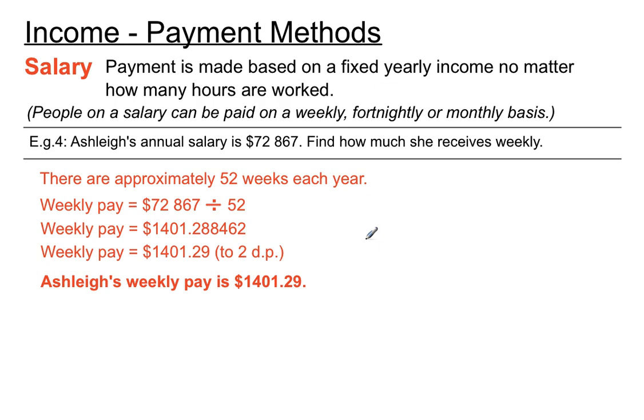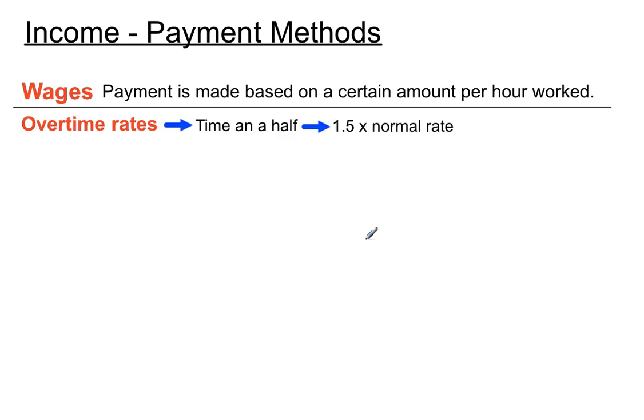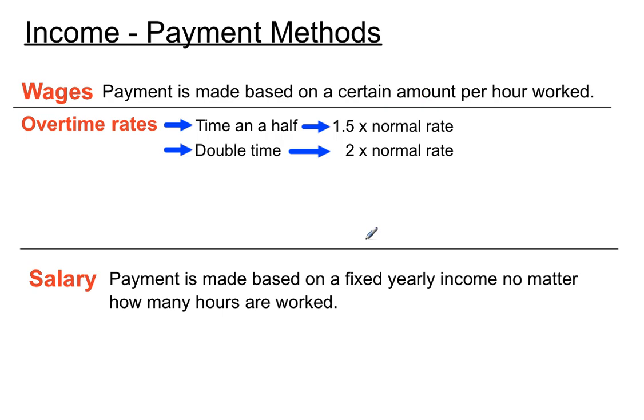All right, that's salaries. And so now we'll sum up. Wages. Payment is made based on a certain amount of hours worked. Now you do have overtime rates like time and a half and double time if you're working on Saturdays or public holidays or Sundays or whatever. And so salaries is based on a fixed yearly income no matter how many hours are worked. But that can be split up into weekly, monthly or fortnightly type pay packets. That's the form that they get them in. So that's a couple of income payment methods. There are others that we'll go on to in the next couple of videos. But that's wages and salaries. They're the main types of ways people get paid.